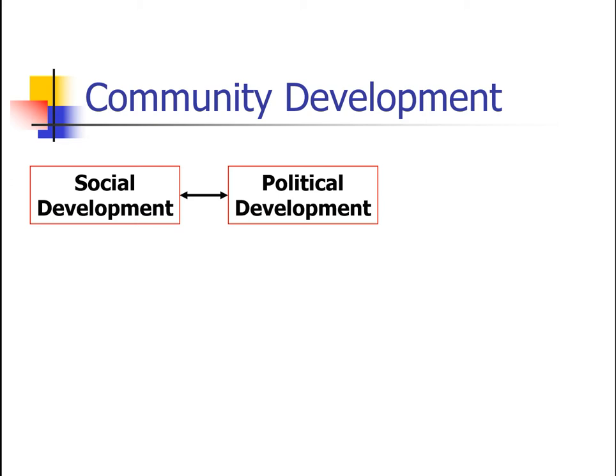With political development, altering the distribution of power within a community is important so that it can be more equitably shared — that's really the goal. The other goal is to empower the community to operate more effectively within the wider society. If you increase the power of individuals and groups within the community, they can contribute to community processes, activities, and decisions. Models and strategies of political development include consciousness-raising, organizing, and social action.